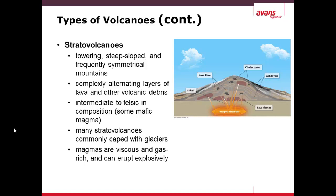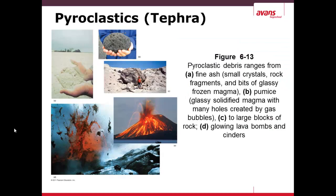Magma in stratovolcanoes is viscous and gas-rich, so it can erupt extremely explosively due to the volatile gases. The eruption of volcanoes can develop into pyroclastic debris ranging from very fine particles — fine ash (photograph A) — to pumice, which is a glassy solidified magma with many holes created by gas bubbles. There are also large blocks of rock (photo C), and glowing lava bombs and cinders (photo D).